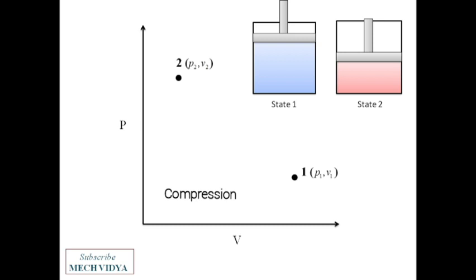Now in between this final and initial state, the system has passed through a series of intermediate states. If we join all these coordinate points, we will get a clear path, and when the path is completely specified, we get a process.